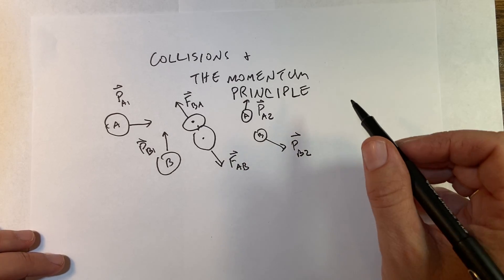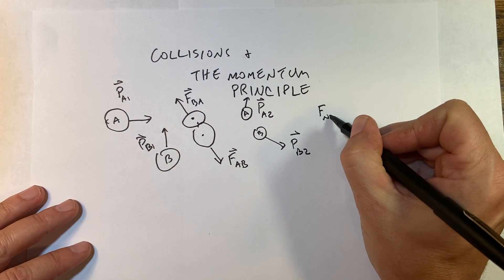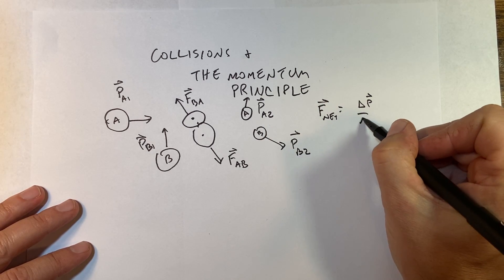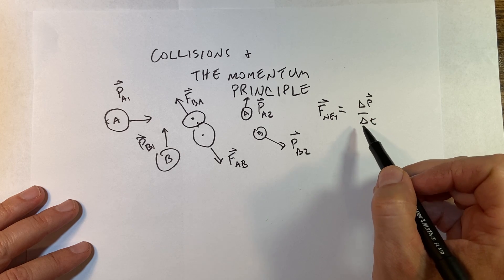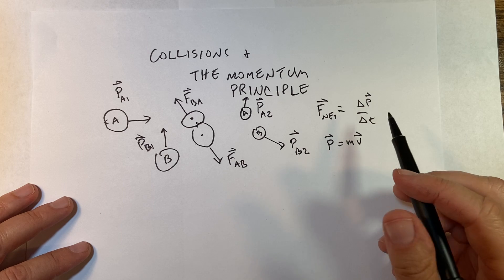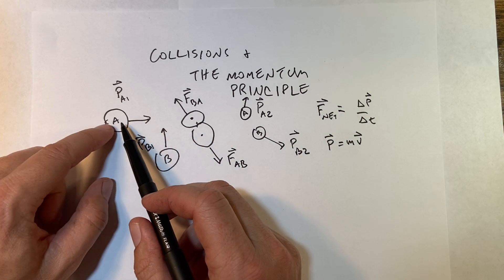This is an application of the momentum principle. Remember, F_net equals delta p over delta t. So this is the net force on an object is equal to the change of momentum. Momentum is mass times velocity and it's a vector.